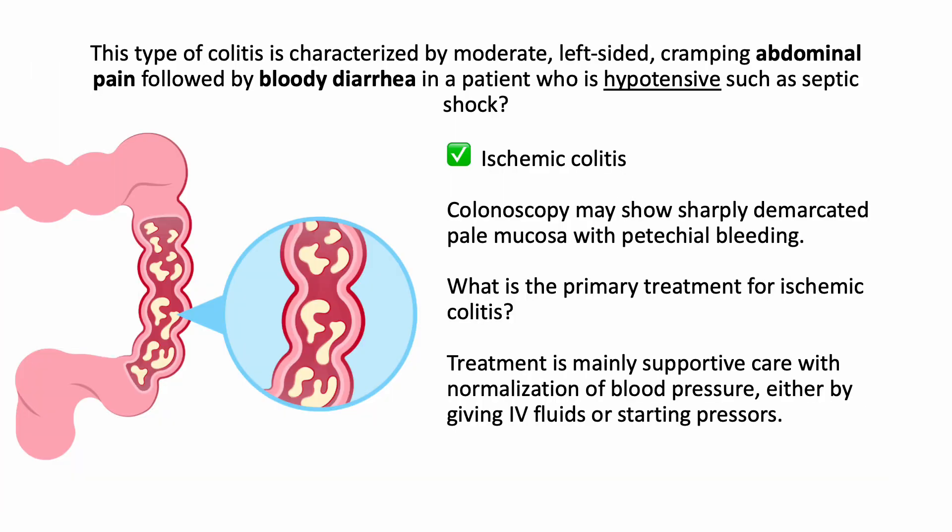Ischemic colitis is described by a moderate left-sided cramping abdominal pain followed by bloody diarrhea in a patient who is hypotensive, such as in septic shock. Colonoscopy may show sharply demarcated pale mucosa with petechial bleeding. The primary treatment for ischemic colitis is mainly supportive care, with normalization of blood pressure either by giving IV fluids or starting the patient on pressors.